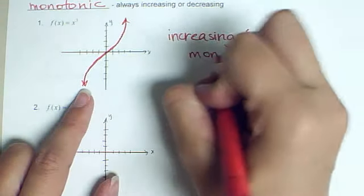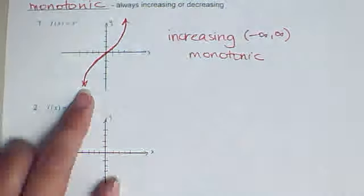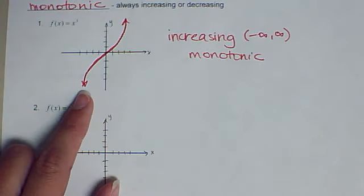Because it's always increasing, it is also monotonic. So it's monotonic and increasing from negative infinity to positive infinity.